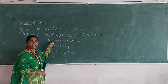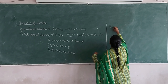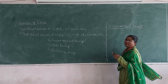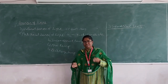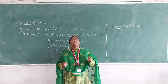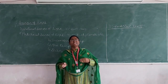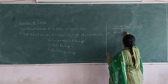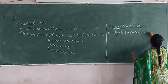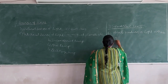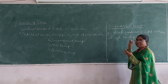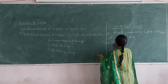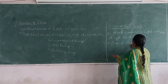Today we are going to see what is an incandescent lamp. The word incandescent means an object produces light when it gets heated. So the lamp which works on the principle of incandescence is known as an incandescent lamp. The incandescent lamp was discovered by Thomas Alva Edison.